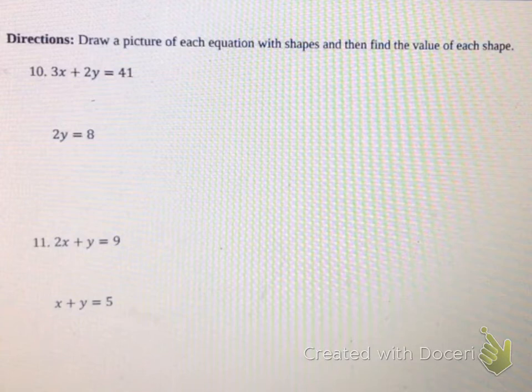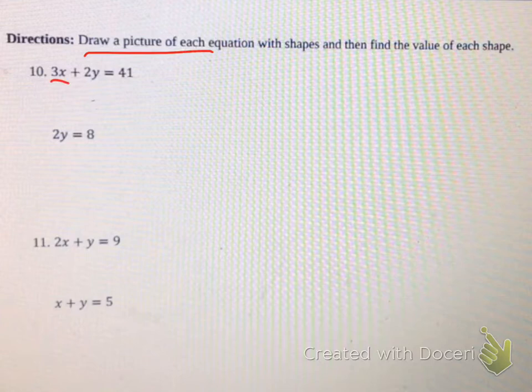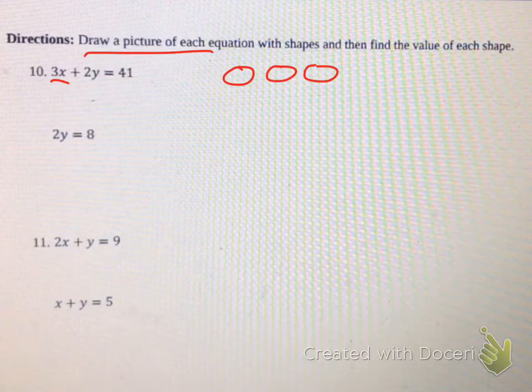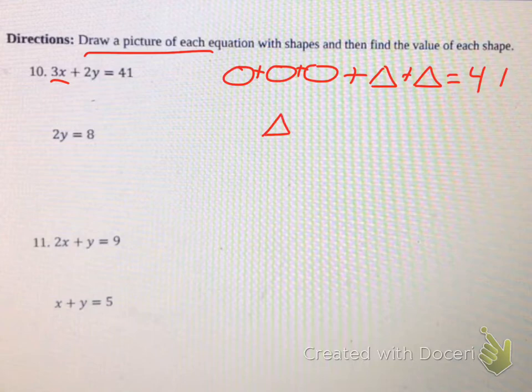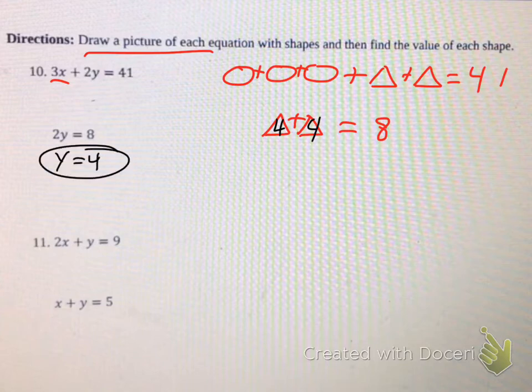I know I went fast, try to understand it. Let's do two more. See if you can get it. This time we're going to work back the other way and draw a picture. So 3x is going to be three circles, 2y is going to be two triangles, so all that added together equals 41. And then 2y equals 8, so two triangles together equals eight, so right away everyone sees that each triangle must be worth four. So y equals four.